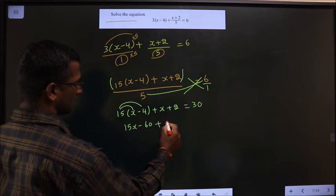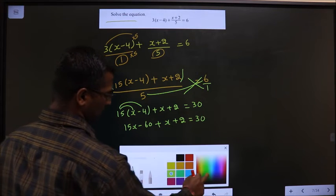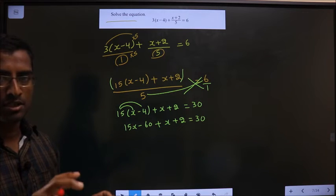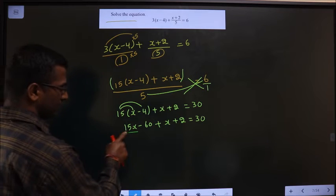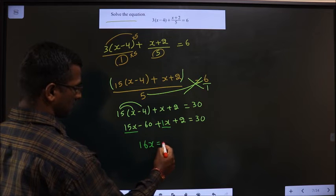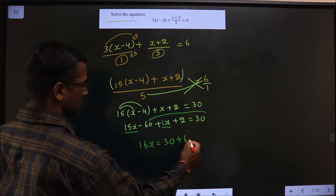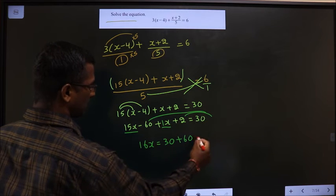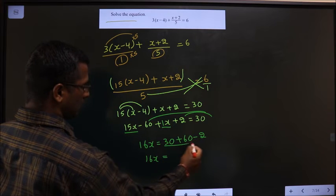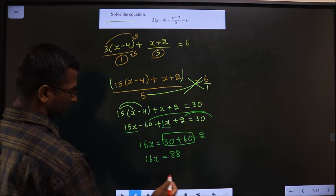So we get 15x minus 60 plus x plus 2 equals 30. Now move all x terms to one side and constants to the other: 15x plus x gives 16x. Shifting minus 60 gives plus 60, and plus 2 becomes minus 2. So 16x equals 30 plus 60 minus 2, which is 88.